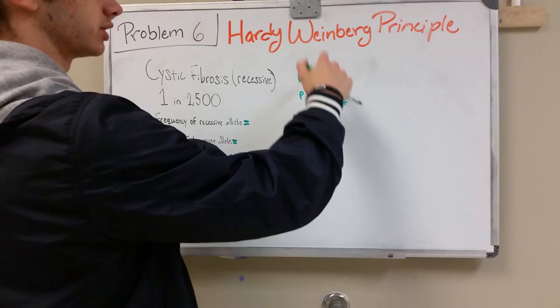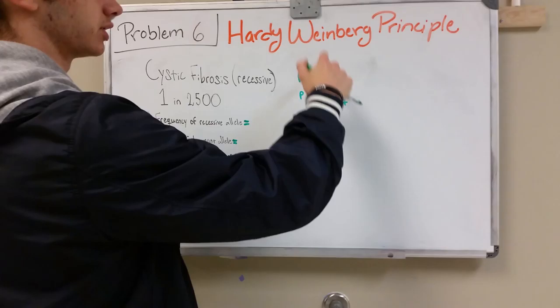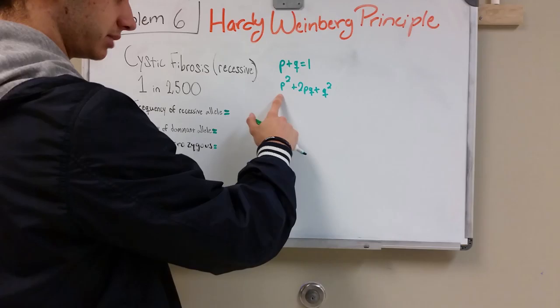So in this formula, P is the dominant allele, Q is the recessive allele, P squared is the homozygous dominant.